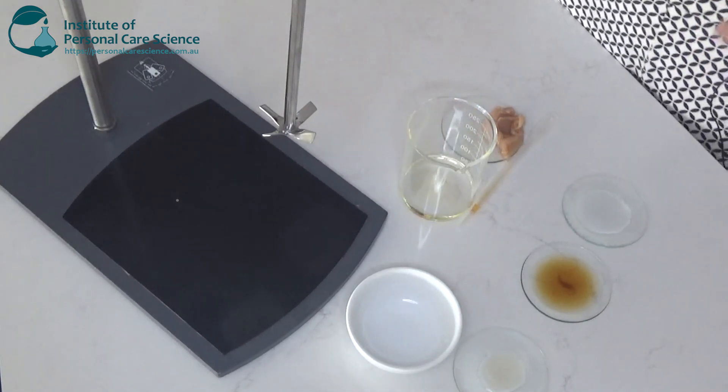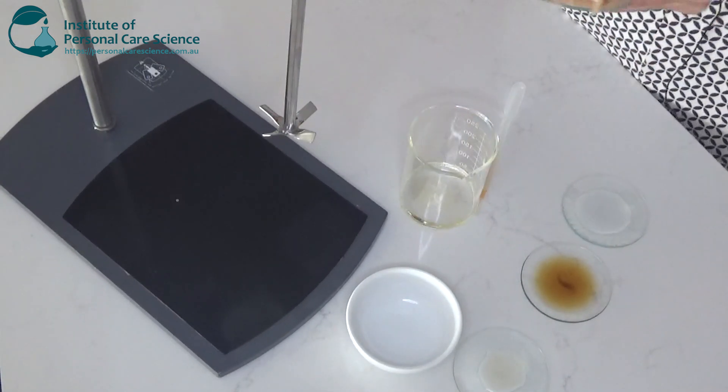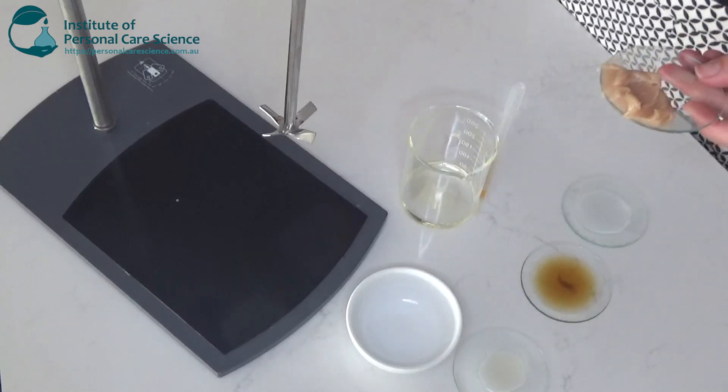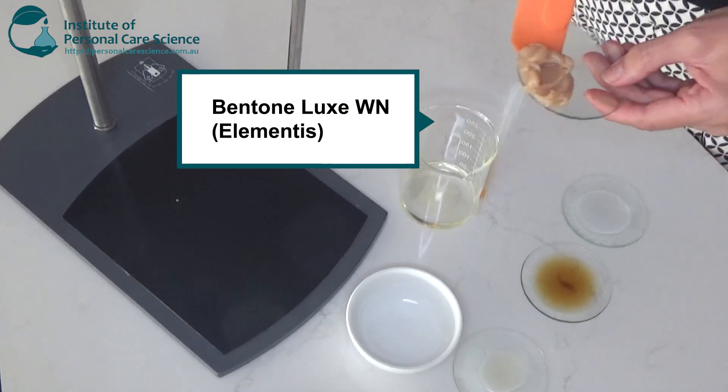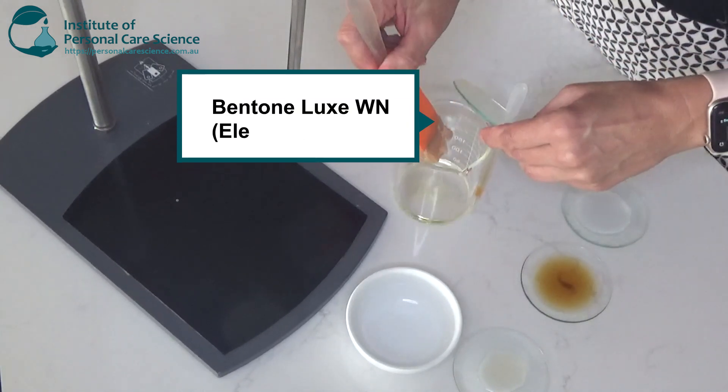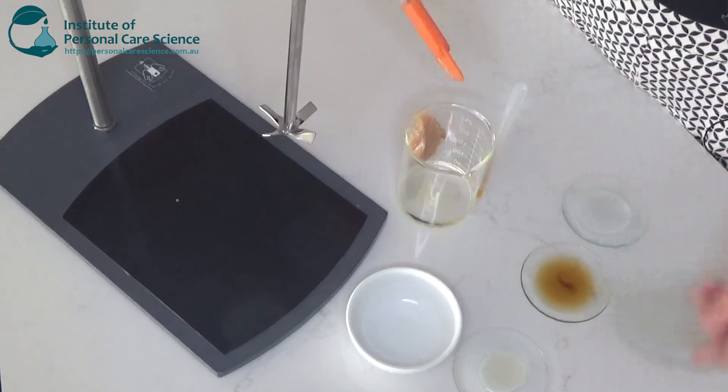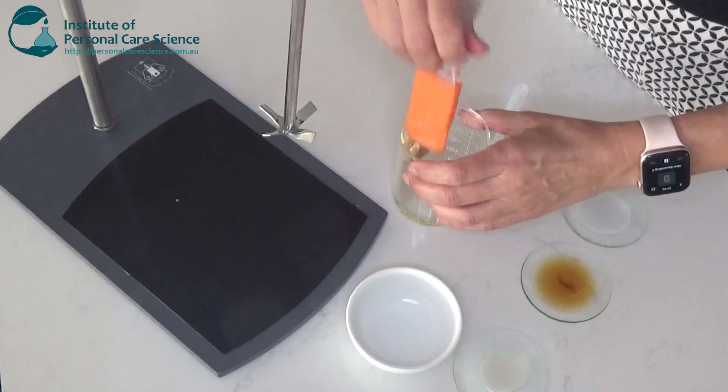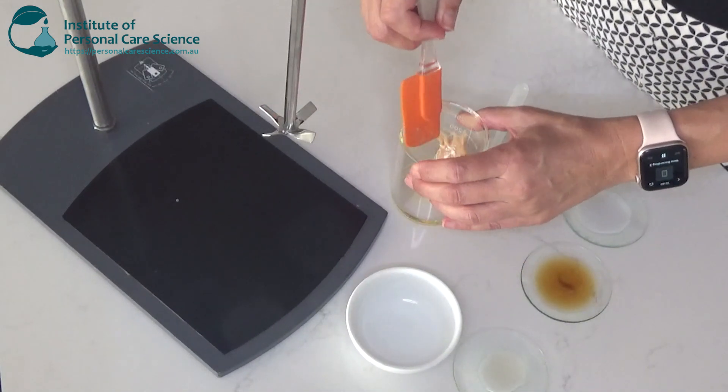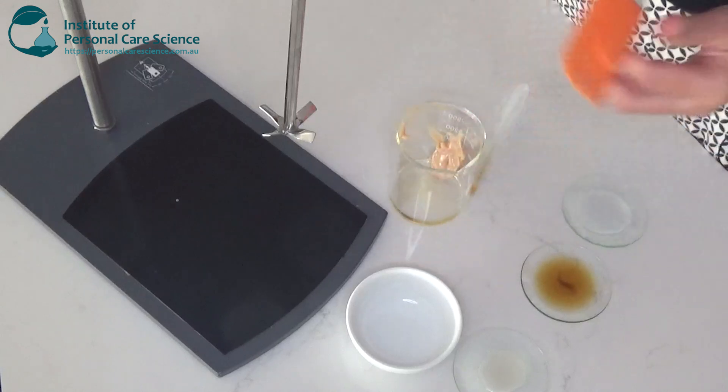And finally some bentone which helps to thicken formulations and stabilize emulsions preventing separation. The bentone creates a smooth, non-greasy and elegant feel which is important for an eye cream.